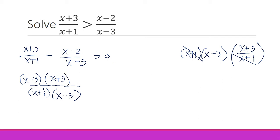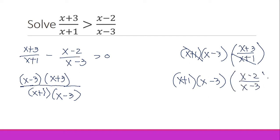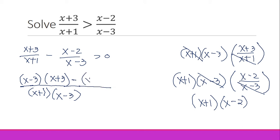For the second term we do the same: multiply the LCD (x plus 1)(x minus 3) by (x minus 2) over (x minus 3). The (x minus 3) cancels, leaving (x plus 1)(x minus 2). So the combined expression becomes (x minus 3)(x plus 3) minus (x plus 1)(x minus 2), all over (x plus 1)(x minus 3), and that is greater than or equal to zero.